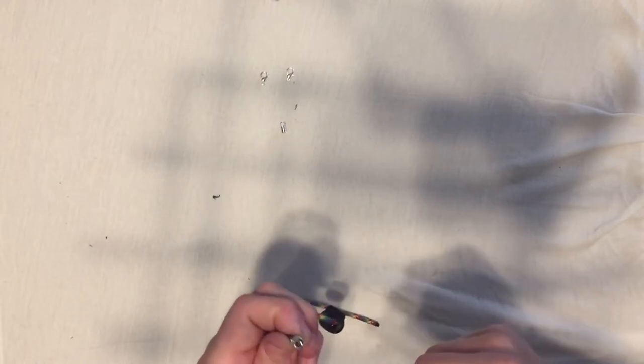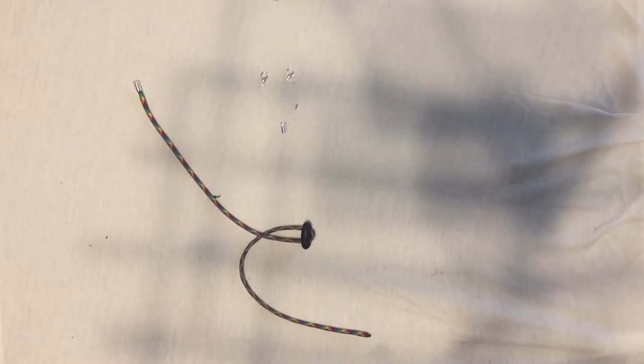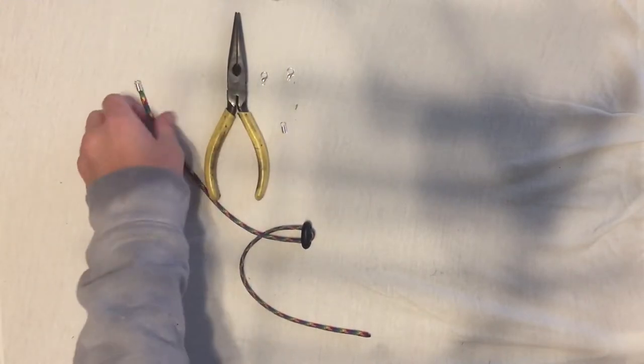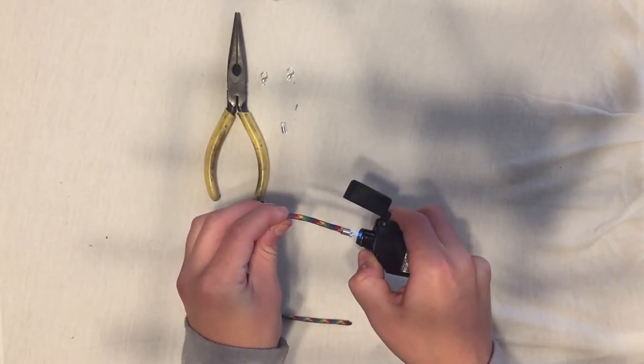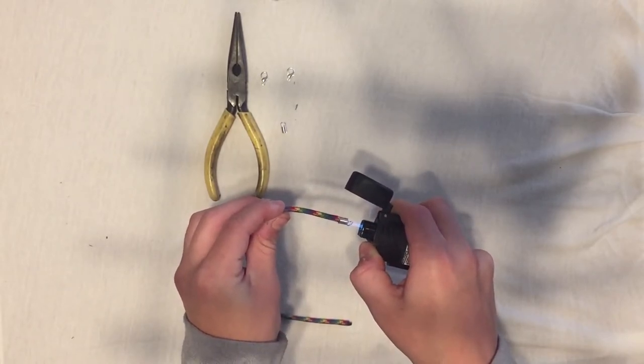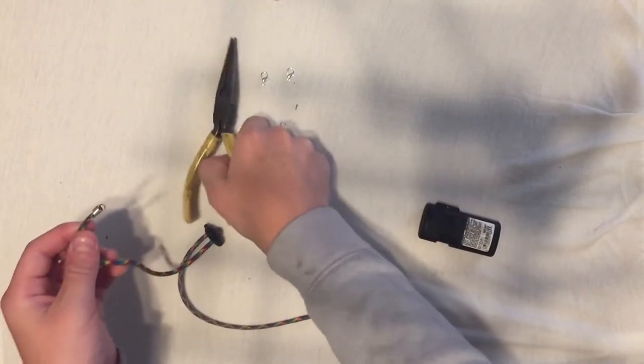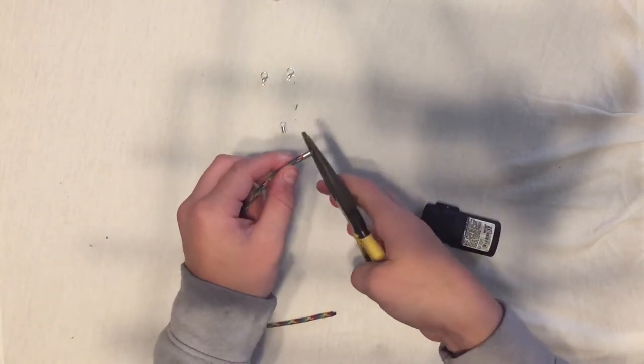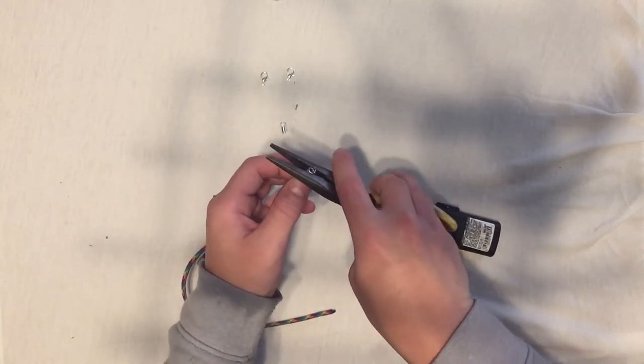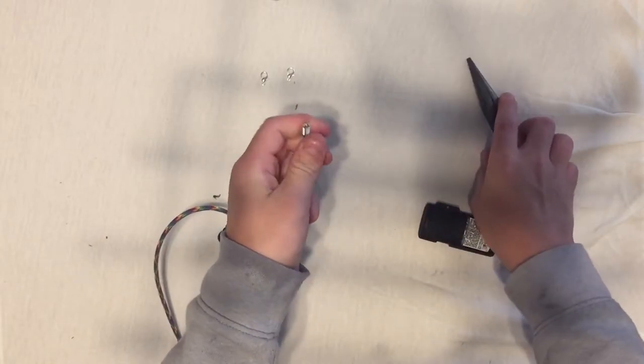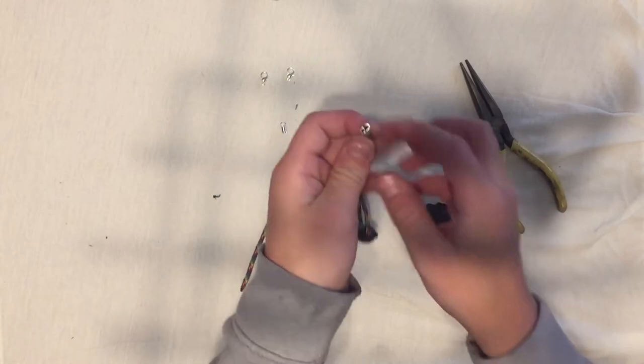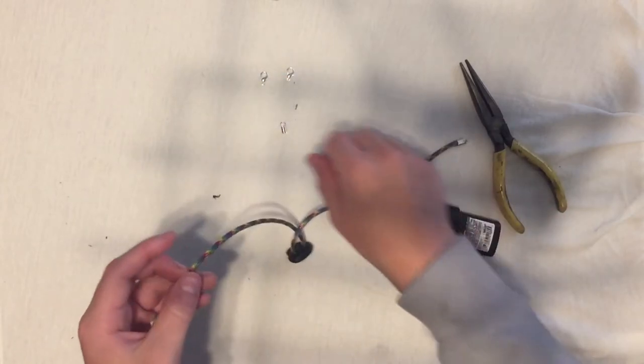So what you're going to do is have your needle nose pliers or any short pliers ready, and you're going to take your lighter and heat up the paracord on the inside. Then you're going to take your pliers and squeeze it shut so that way it's nice and tight and locked on there.